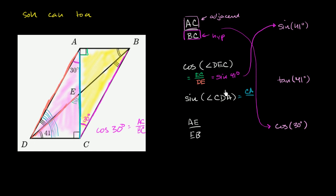We don't see CA over AD as a choice, but maybe this ratio is a trig function of one of the other angles. They give us this 30-degree angle — angle DAC. Relative to that angle, CA is the adjacent side and AD is the hypotenuse, so this is adjacent over hypotenuse — that's cosine. So sine of CDA equals cosine of 30 degrees, and we drag that into the appropriate bucket.